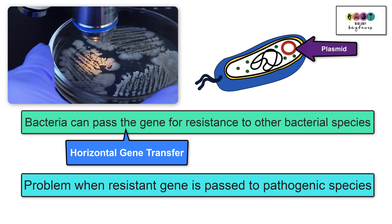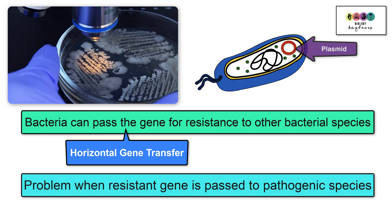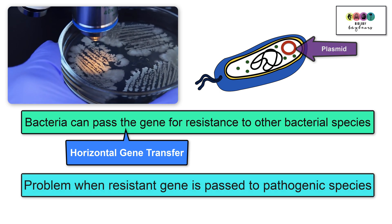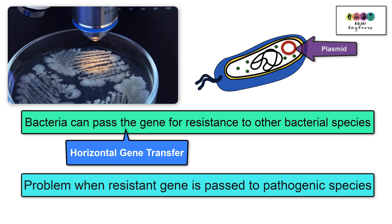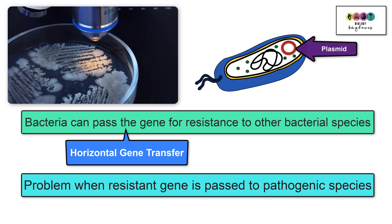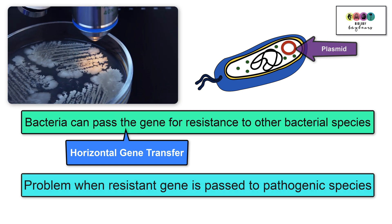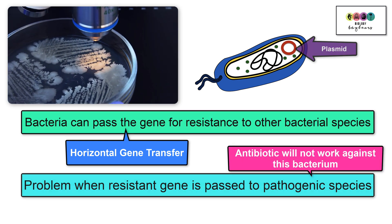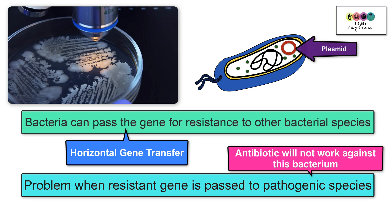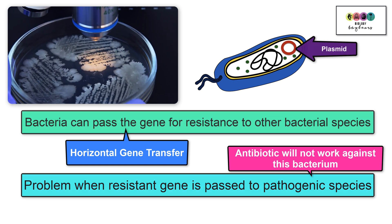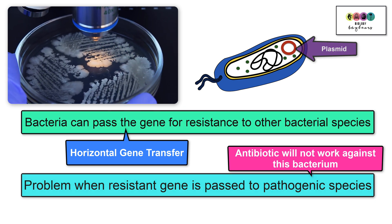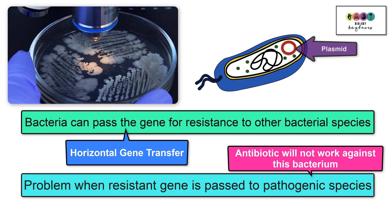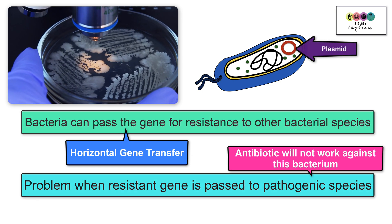This becomes a serious problem when the gene for antibiotic resistance gets passed to a species of bacteria that causes human or animal disease. You can end up with a situation where an antibiotic which was once effective at killing or inhibiting the growth of a particular bacterial species no longer does so.